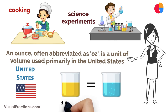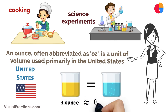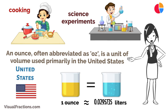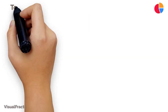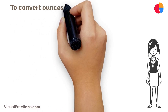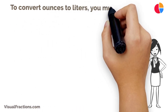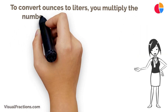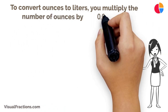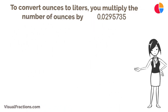The conversion factor here is key. One ounce is approximately equal to 0.0295735 liters. To convert ounces to liters, you multiply the number of ounces by 0.0295735.